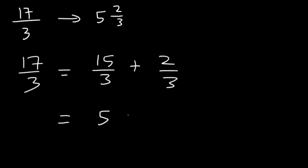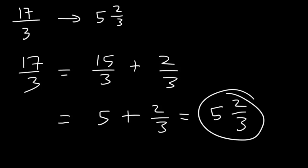Now, 15 divided by 3 is 5, and 5 plus 2 thirds is equivalent to 5 and 2 thirds. So, that's how you can go back from an improper fraction to a mixed number.